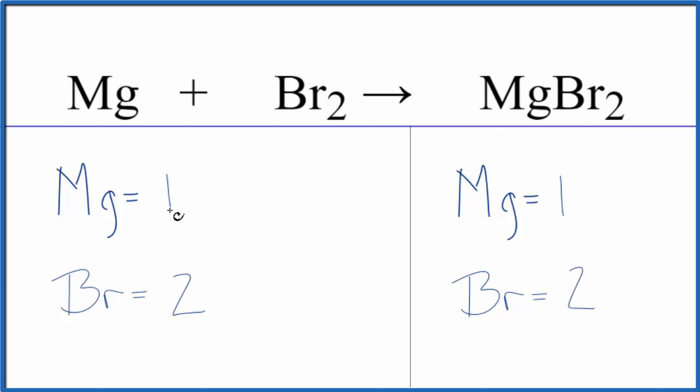When we look at these numbers, they're the same for each element. That means that this equation, it's already balanced. The reason we get MgBr2 is that magnesium,